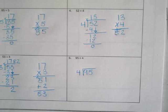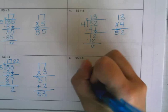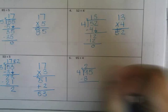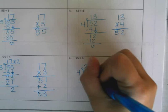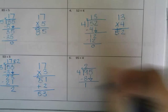How many times can 4 go into 9? 2. You got it. 4 times 2 is? 8. 9 take away 8 is? 1. And then what do I have to do? Bring down my 5.